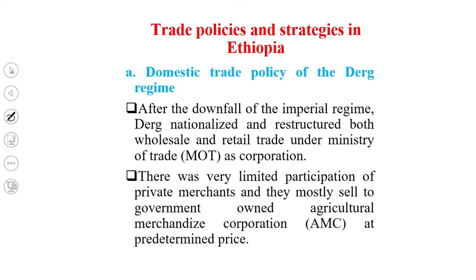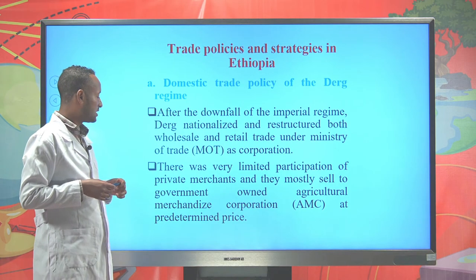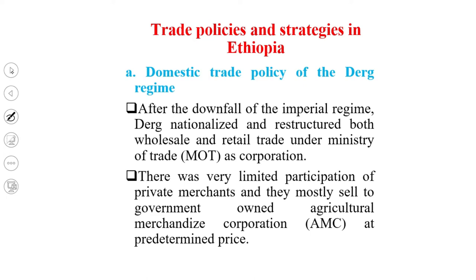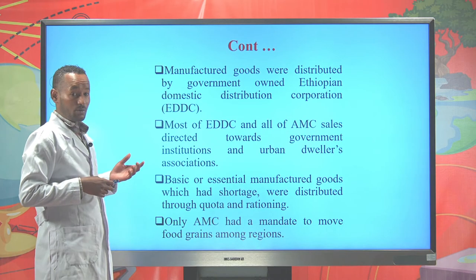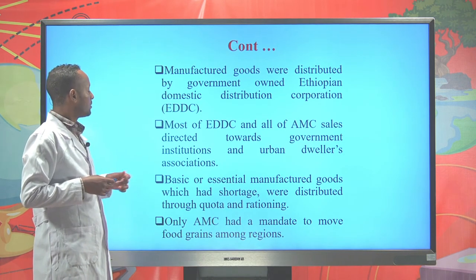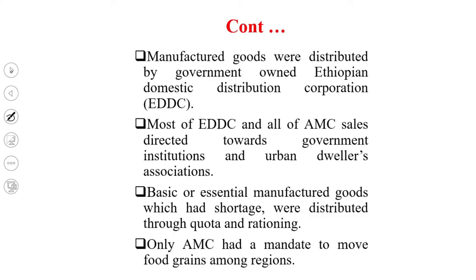Now let's see trade policy and strategies in Ethiopia. After the downfall of the imperial regime, the DERG nationalized and restructured both wholesale and retail trade under the Ministry of Trade as a corporation. There was very limited participation of private merchants, who mostly sold to the government-owned Agricultural Merchandise Corporation (AMC) at predetermined prices. Manufactured goods were distributed by the government-owned Ethiopian Domestic Distribution Corporation (EDDC), directed mostly towards government institutions and urban dweller associations.